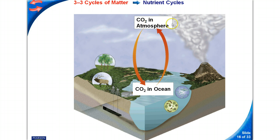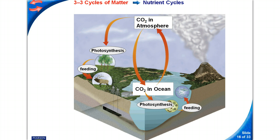We have CO2 in the atmosphere, CO2 in the ocean. CO2 is used in photosynthesis. The photosynthesis then feeds the animals.